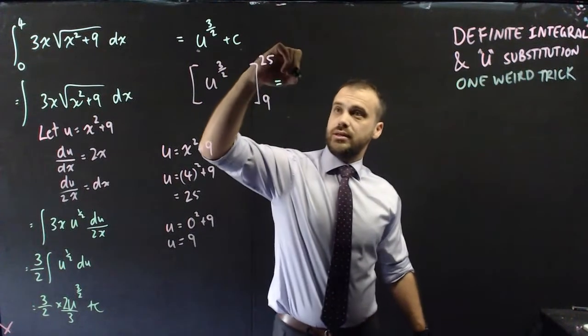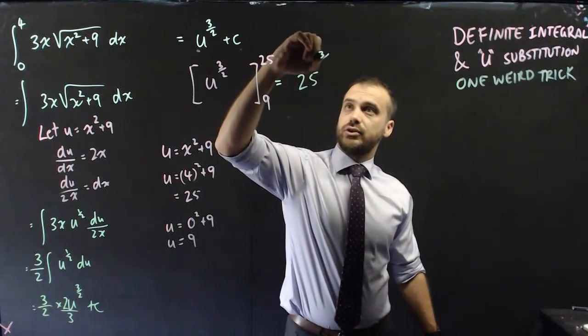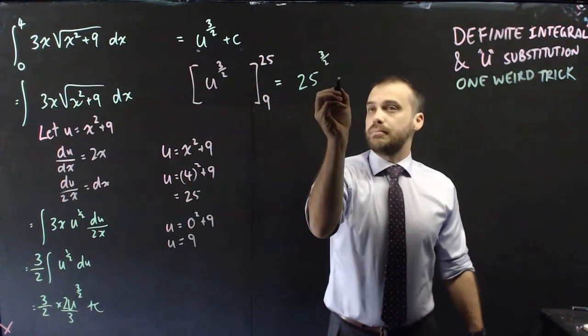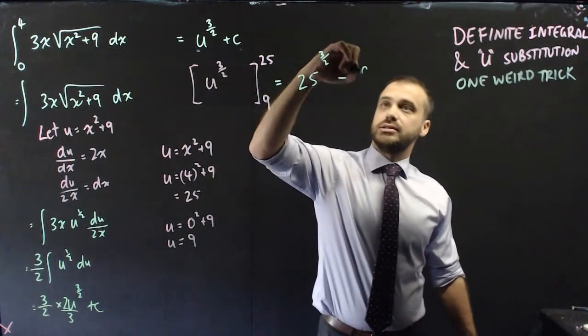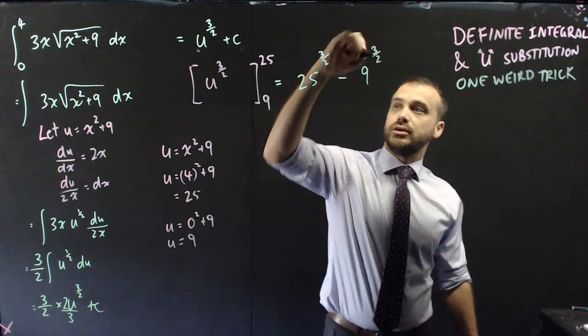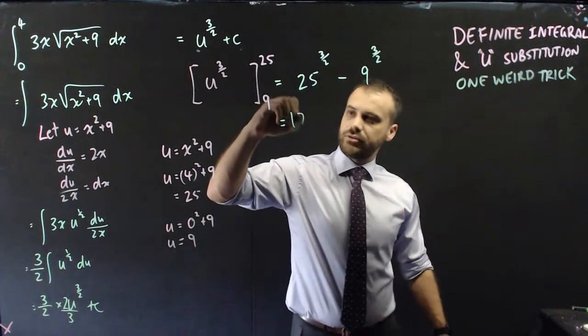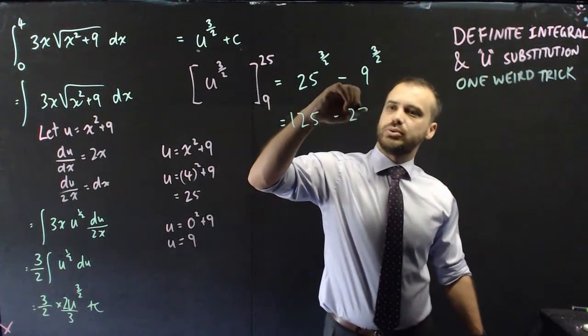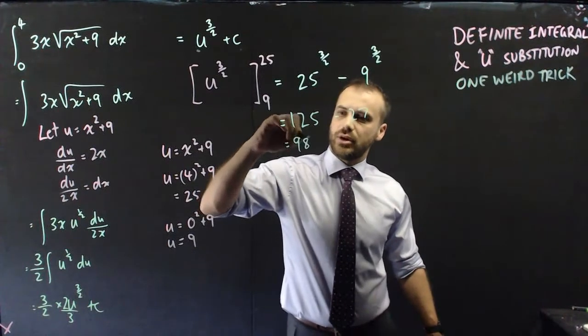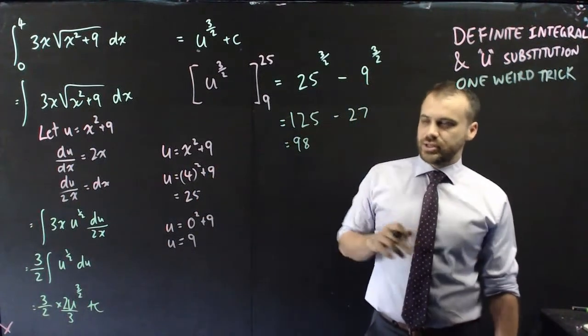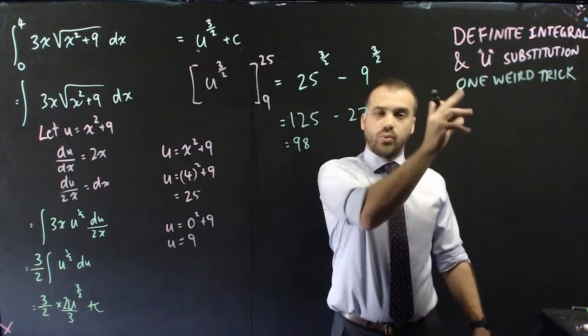So subbing 25 in there, I'm going to get 25 to the 3 over 2, and minus subbing 9 into there, 9 to the 3 over 2. Now this is going to be 125, this is going to be 27, and our answer is going to be 98. That is our one weird trick.